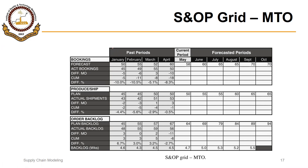For example, in the case of a make-to-stock production environment, we had sales at the top. Here we are having bookings because this is a make-to-order production environment. Then, very similar to a make-to-stock production environment, we have some entries and calculations related to production or shipment. And finally, instead of finished goods inventory, we are having order backlog in this case.